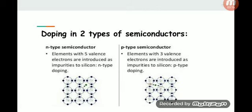Doping in two types of semiconductors: In n-type semiconductor, elements with five valence electrons are introduced as impurities to silicon. In p-type, elements with three valence electrons are introduced as impurities to silicon. This is the difference between the two semiconductors while doping.